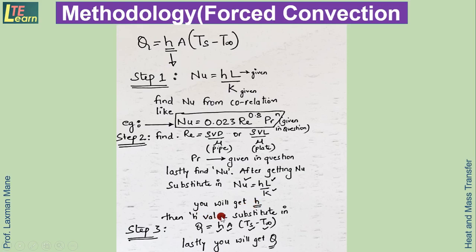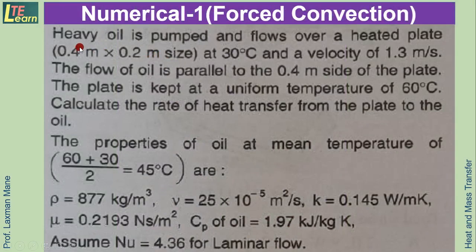Substituting the H value into the heat transfer formula gives us Q. Now let's take a numerical: heavy oil is pumped and flows over a heated plate of size 0.4 m × 0.2 m at 30°C with a velocity of 1.3 m/s. The flow is parallel to the 0.4 m side. The plate is kept at a uniform temperature of 60°C. Calculate the rate of heat transfer from the plate to the oil.